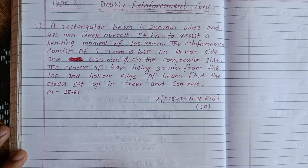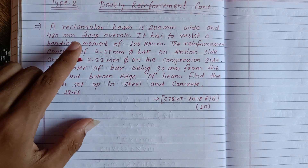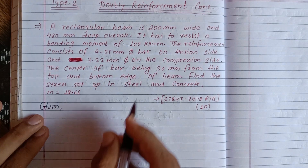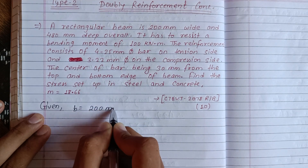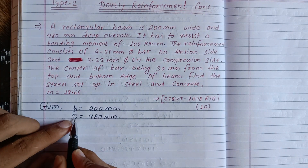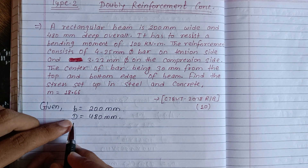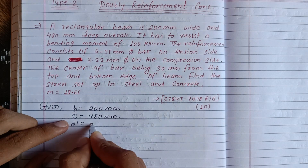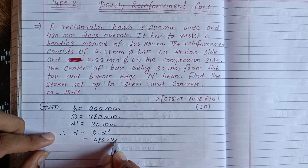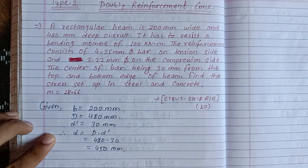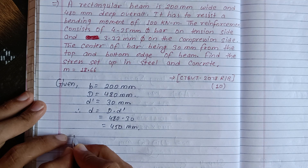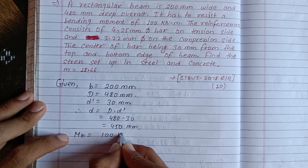First of all, the given data: our rectangular beam is 200 mm wide. The overall depth is noted. D minus d2 gives us the effective depth D. The bending moment MB is equal to 100 kilonewton per meter.